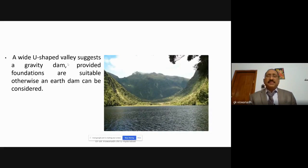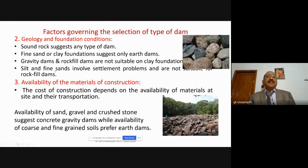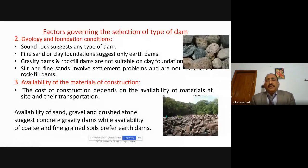Earth dams, as we discussed, can be constructed and are most suitable and most economical. But the limitation is that they cannot be constructed to greater heights — maybe only up to about 45–50 meters. The second condition is geology and the foundation condition, which may affect the selection of the type of dam.